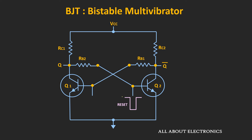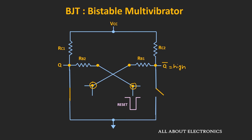As soon as we apply the reset pulse — a negative-going trigger pulse to the base of transistor Q2 — transistor Q2 will go into the cut-off region and act as an open circuit. That means output Q-bar will become high. As the same voltage is also applied to the base of transistor Q1, transistor Q1 will go into saturation and act as a short circuit. In this condition, output Q will become low. We can say that due to this triggering pulse, the output of the multivibrator has gone from one stable state to another stable state.